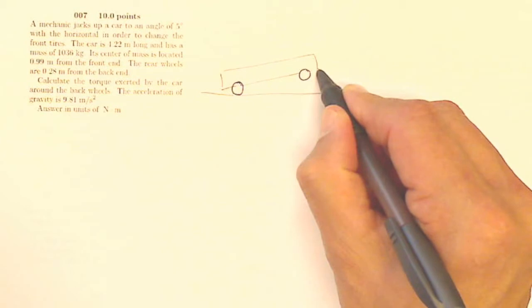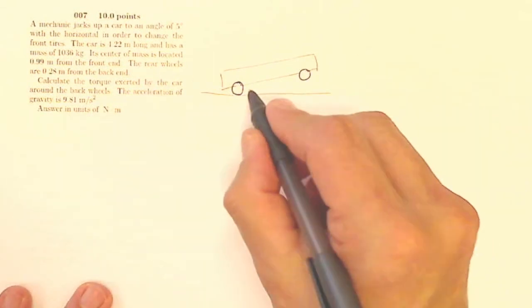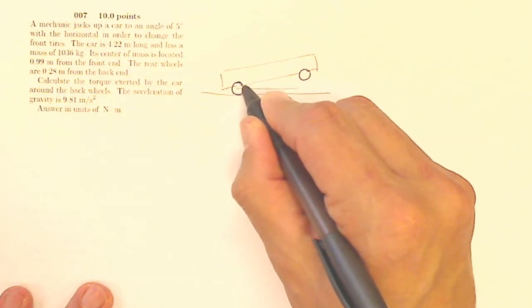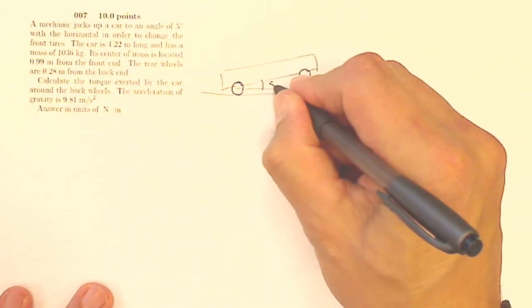And I'm just going to draw the car like this. I've got five degrees. That's going to be my theta around everything. It's going to be five degrees is this angle.